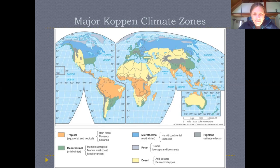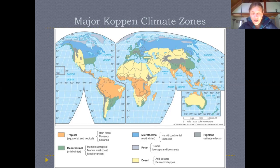The earth can be broken up into these different zones that share different climates, and therefore the organisms living in these different parts of the world will need similar adaptations. They might look similar to each other, and might even be exactly the same species from one continent to another, because of the shared climate there.